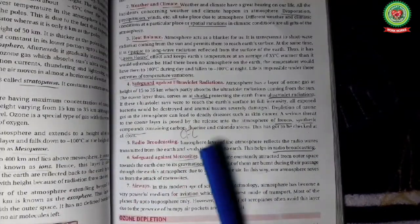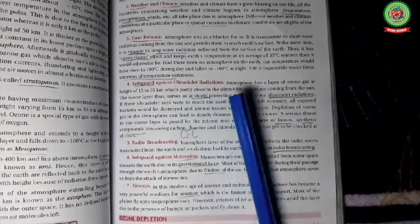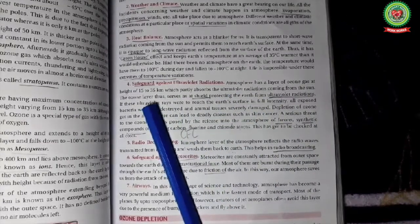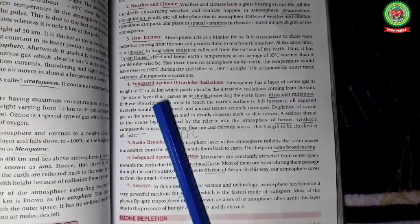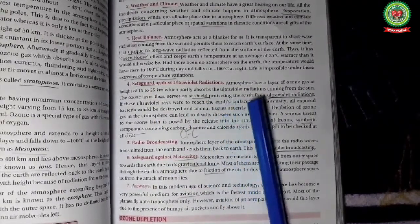Safeguard against ultraviolet radiations: atmosphere has a thick layer of ozone gas at the height of 15 km to 35 km. This ozone layer absorbs the ultraviolet radiations coming from the sun.